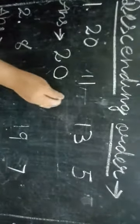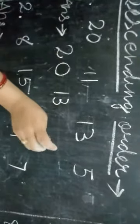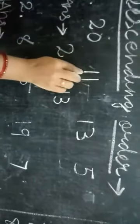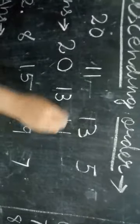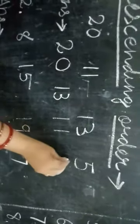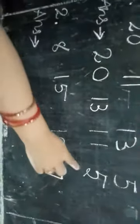Next is 20. And then 20 and 13 is over. So what number is left? 11 and 5. So what number are we writing here? Here 11. The next is 5. This is a descending order.